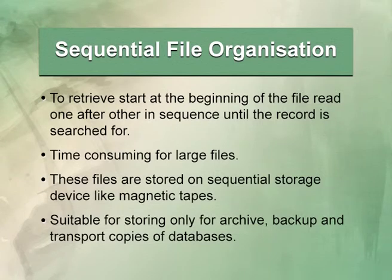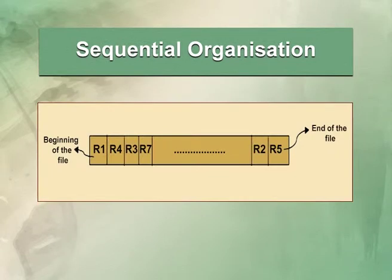For commercial needs and daily transactional activities in a bank or insurance company, you should not use sequential technique, because if a customer asks for data by account number, you need random access. Sequentially checking would take more time. The best use is for archives, backups on tapes, and transporting database copies. In the diagram, the sequential file organization shows records R1, R4, R3, R7 at the beginning growing up to the end of the file.